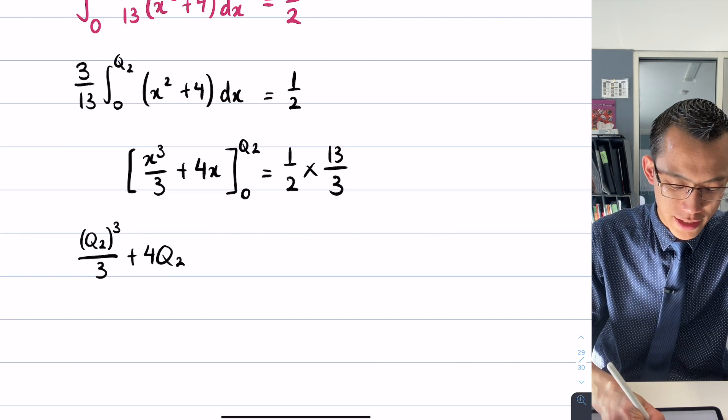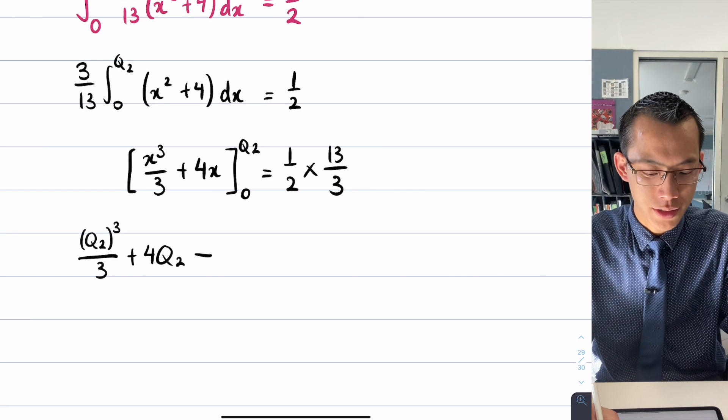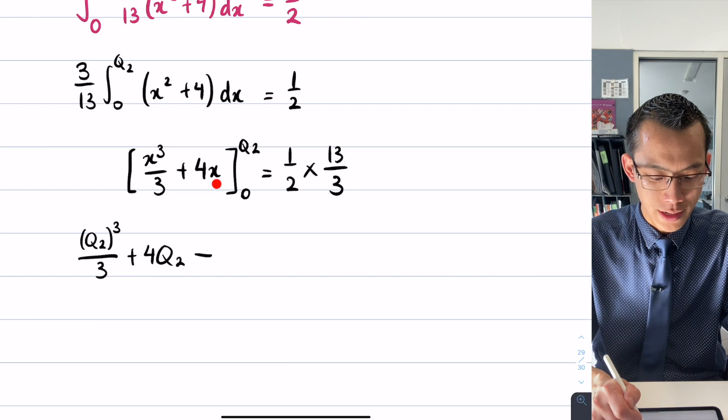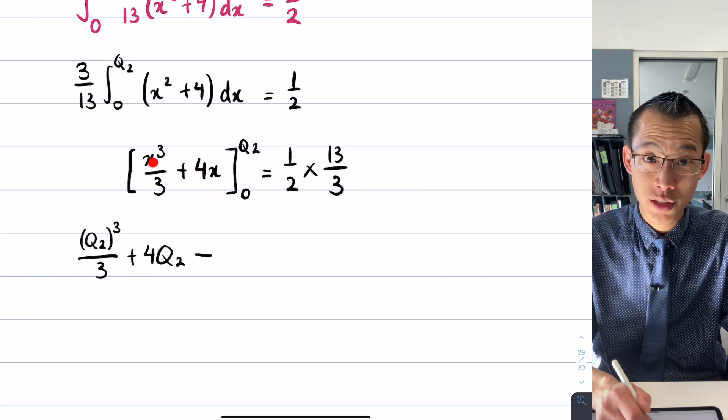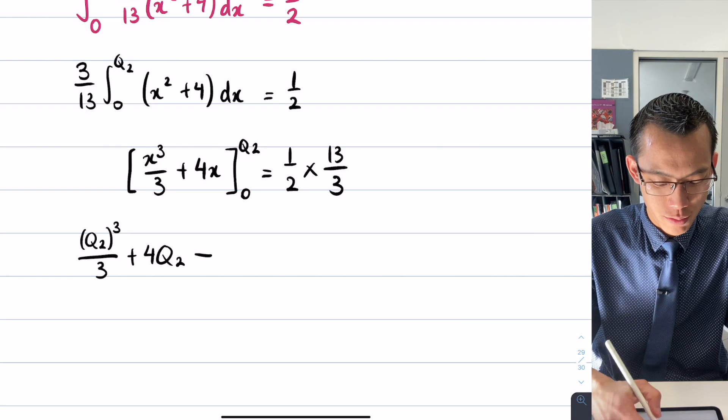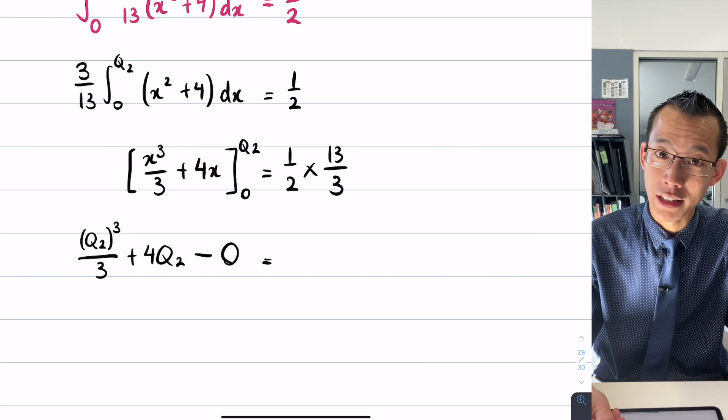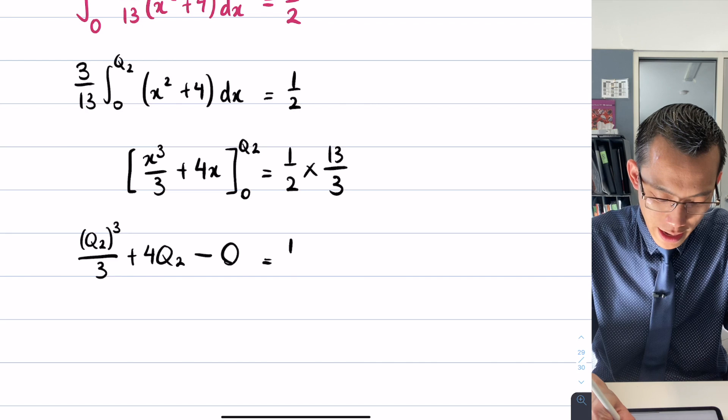Integration done, let's do our evaluation at each of the upper and lower bounds. Here comes the upper bound, so it's Q2 cubed divided by 3 and then I've got 4 lots of Q2, and then I subtract my lower boundary, which is 0.